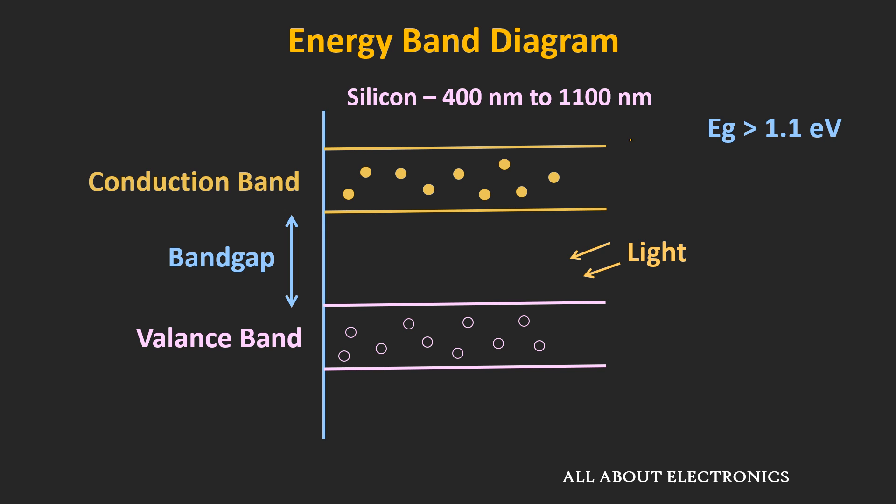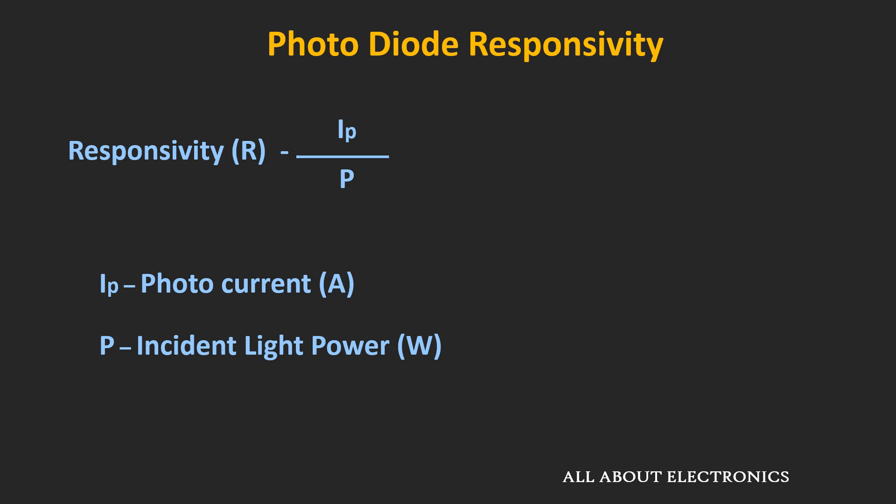For any given photodiode with a given intensity of light, how much photocurrent will be generated is represented using the term responsivity. This responsivity is the ratio of generated photocurrent to the incident light power, and it is represented in units of ampere per watt. This is one of the main parameters you often find in datasheets. Responsivity is a function of wavelength as well as the quantum efficiency of the photodiode.